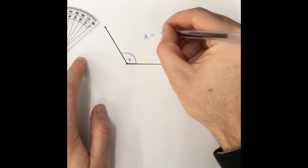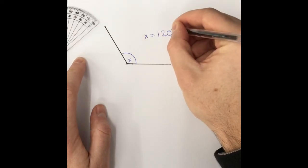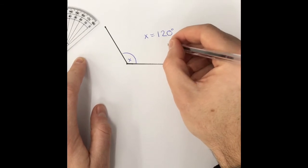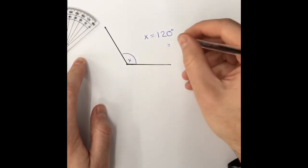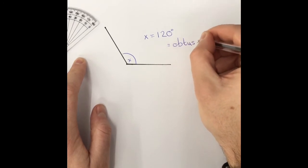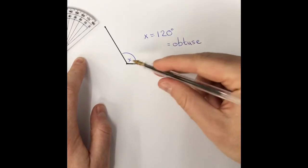X equals 120 degrees, which would of course make this angle, what? That's right, an obtuse angle, because it's greater than 90 degrees.